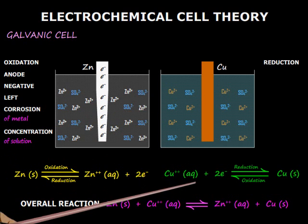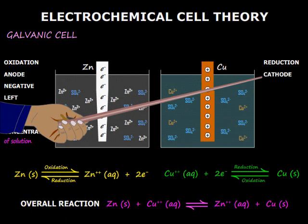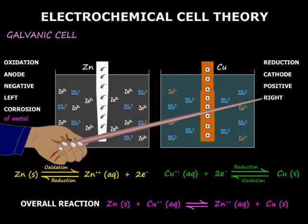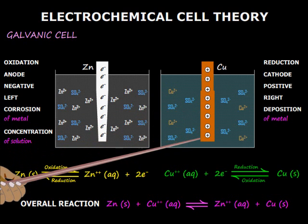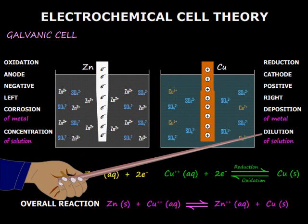Here reduction reaction rate is higher, so reduction takes place spontaneously. It is called cathode, which is the positive electrode, and is drawn on the right. Here copper strip mass increases and is called metal deposition, and the copper sulfate solution gets diluted.